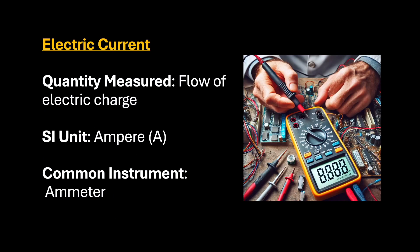Next is electric current. Electric current is nothing but the flow of electric charge. Electric current can be measured in ampere — the symbol is capital A. The common instrument used to measure electric current is an ammeter.